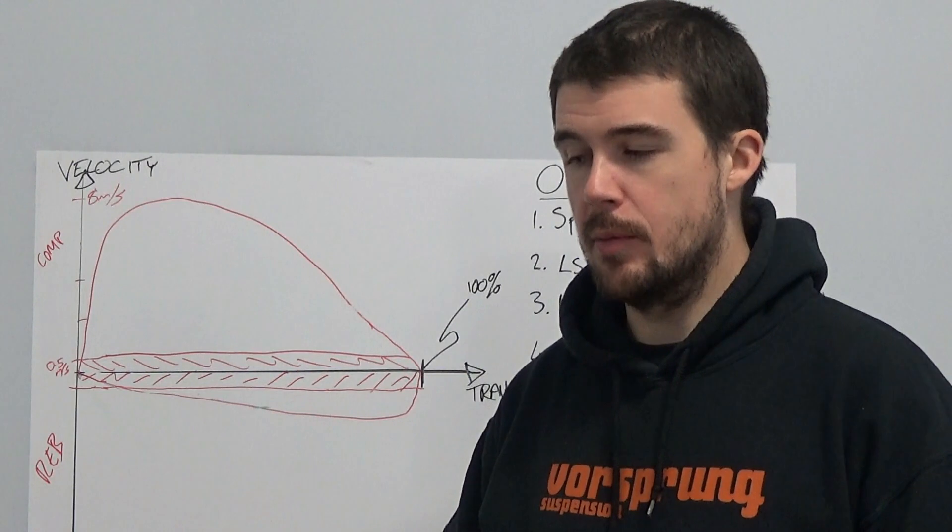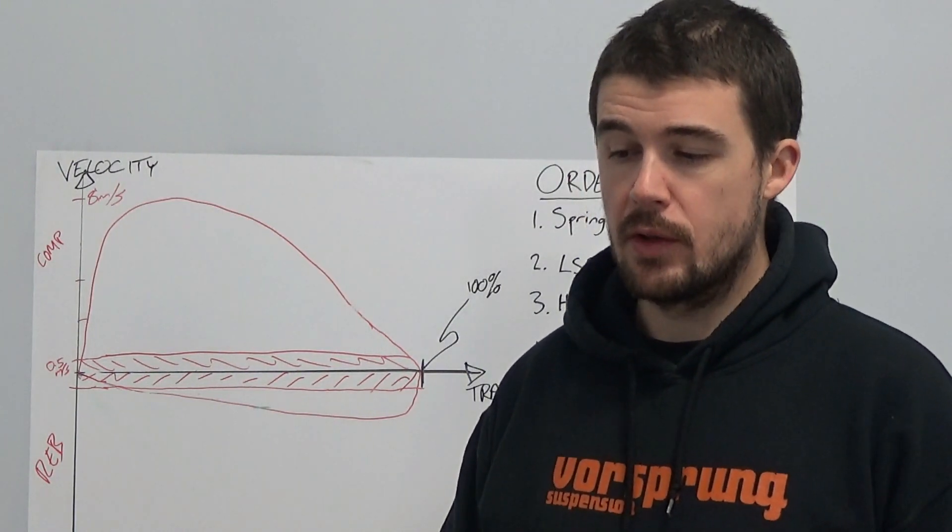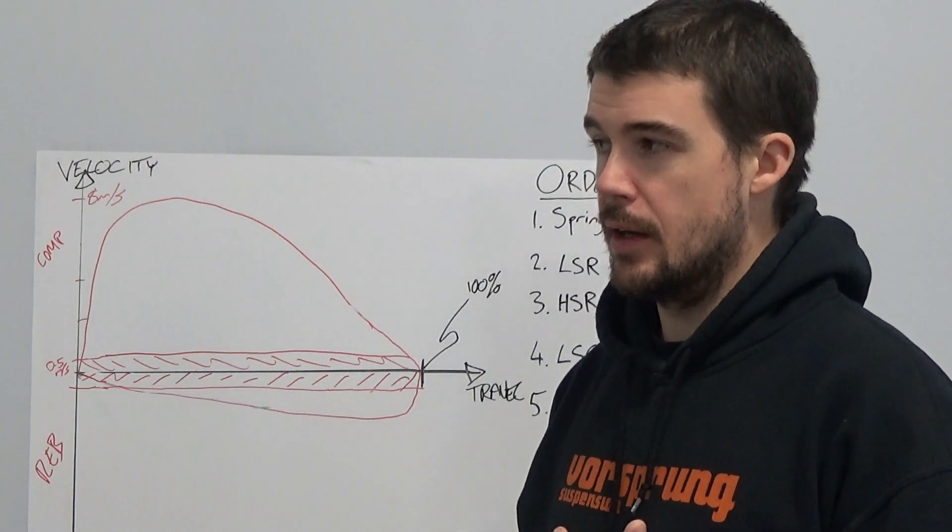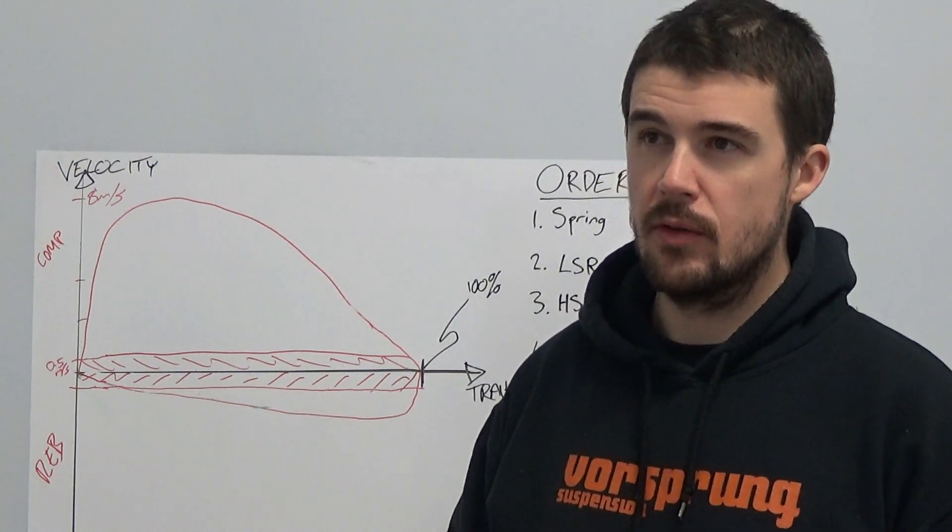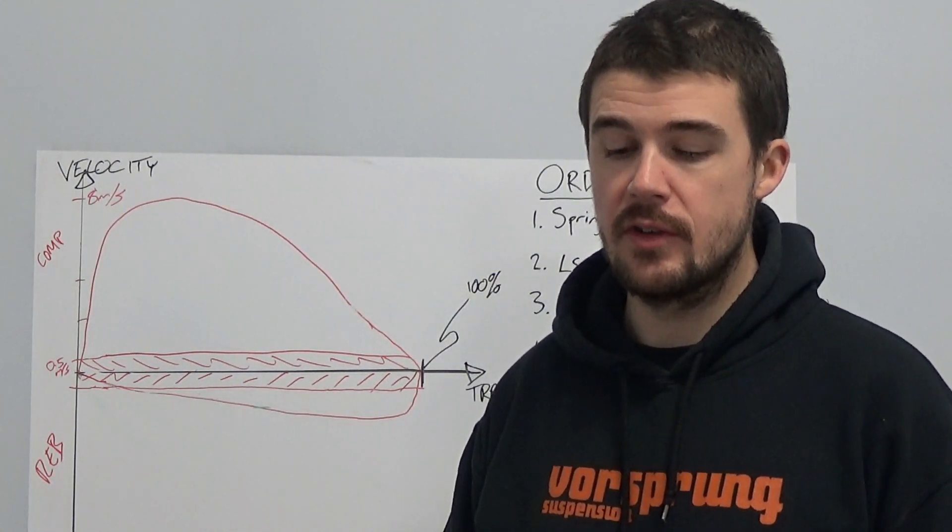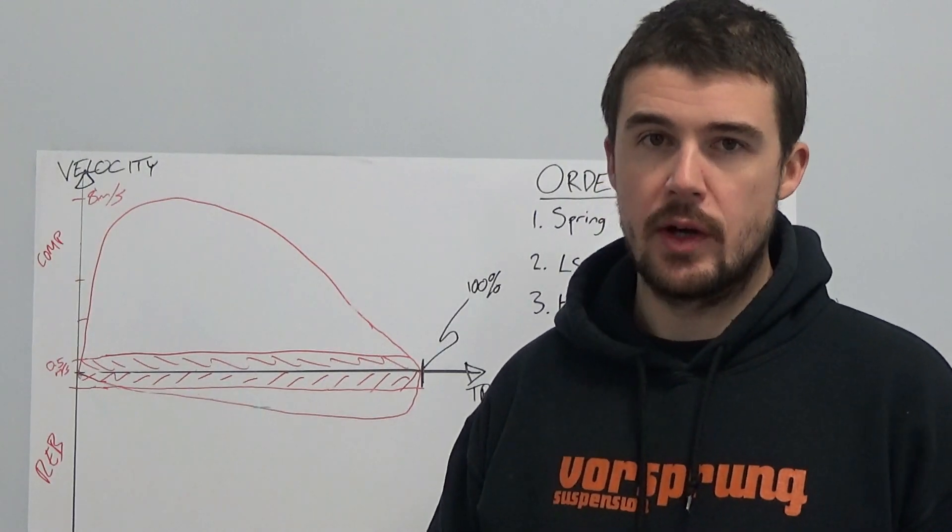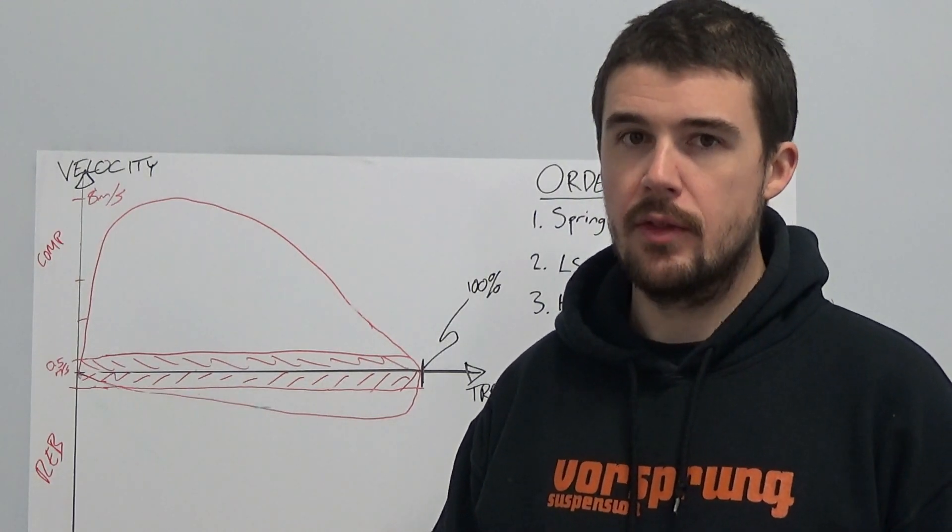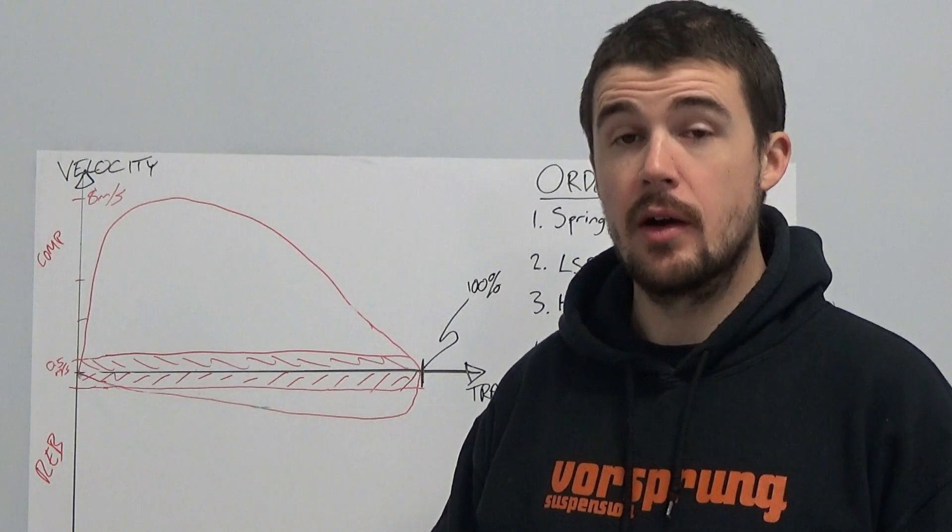So first of all, before we go into either of those, let's have a quick look at the limitations of your suspension in terms of the velocities that you can see. And from that, we can try to understand a bit better where the high and the low speed become most applicable.